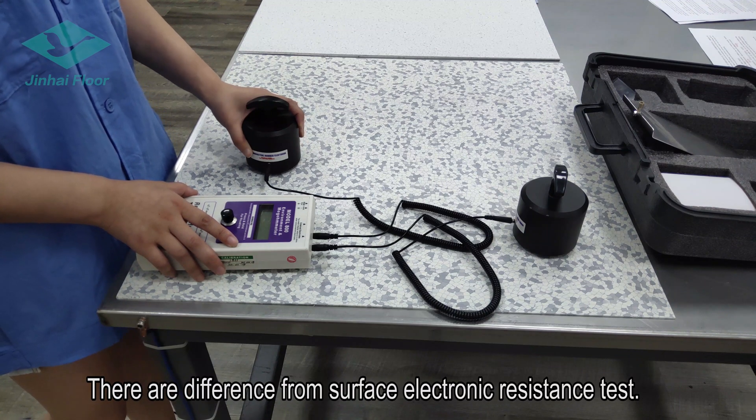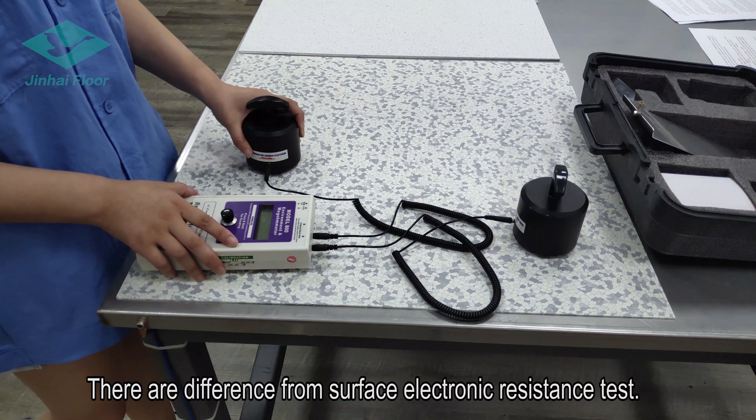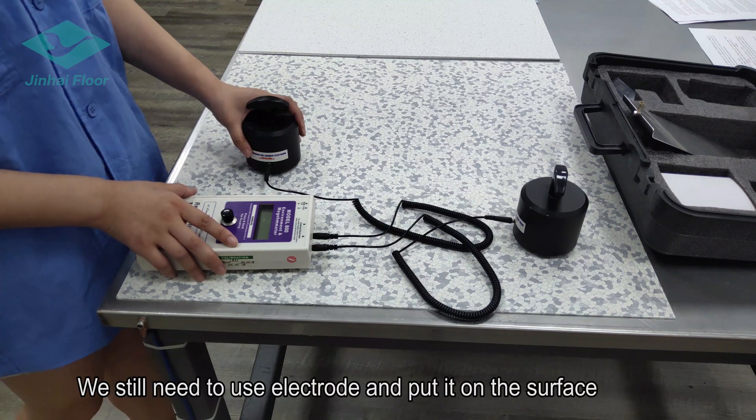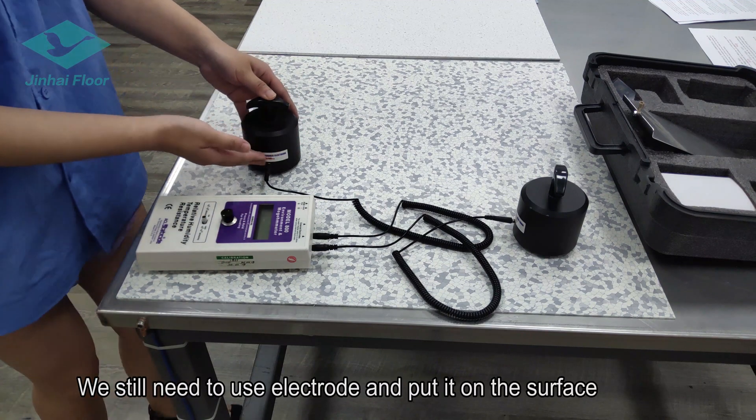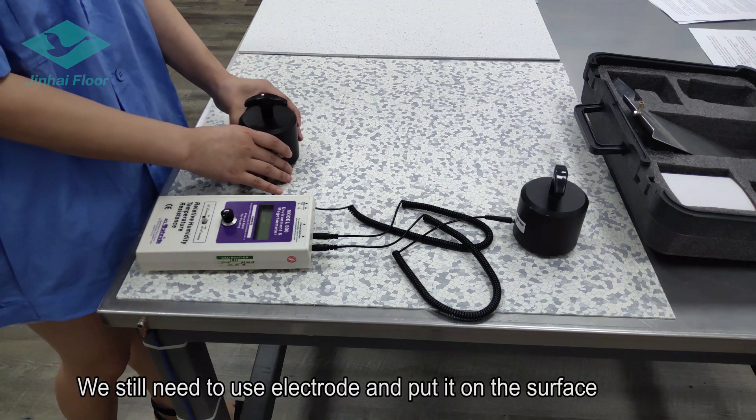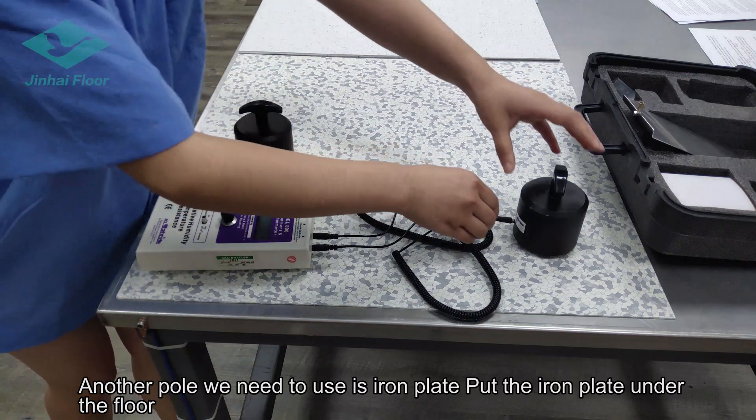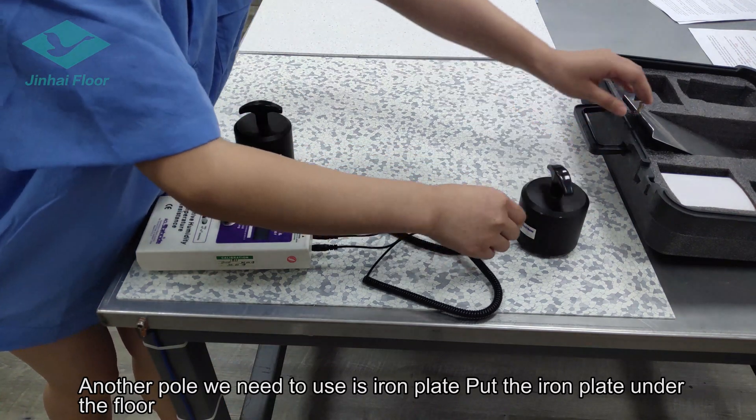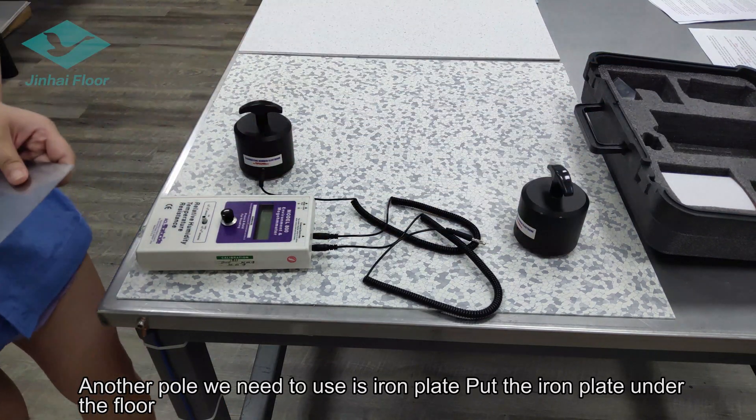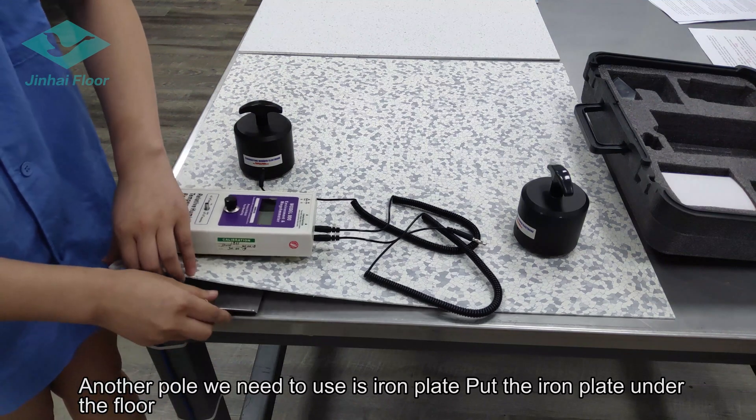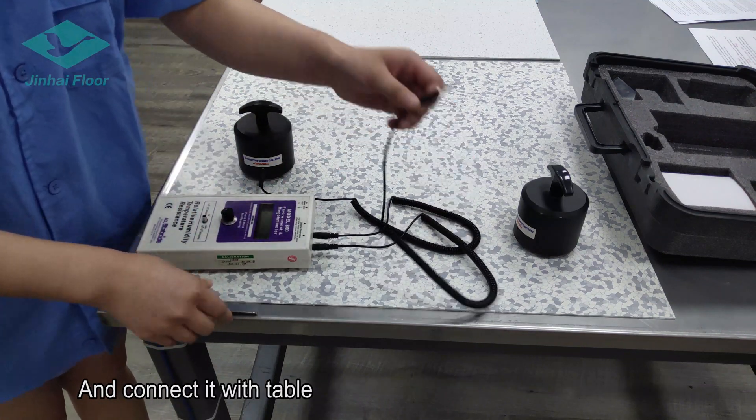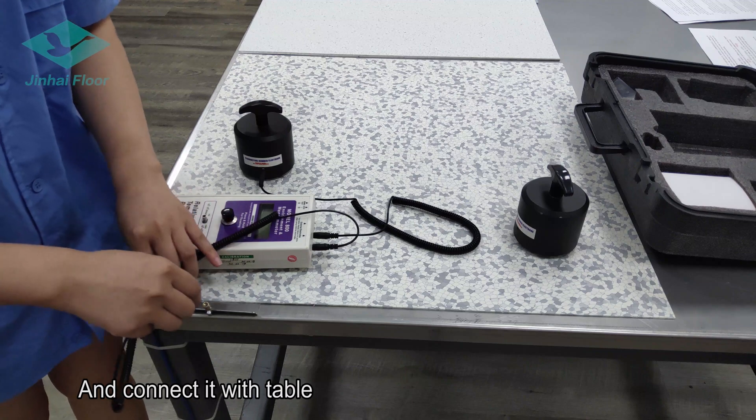There are differences from the surface electronic resistance test. We still need to use electrode and put it on the surface. Another point, we need to use the iron plate. Put the iron plate under the block and connect it with the table.